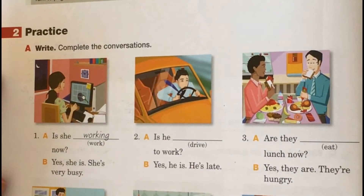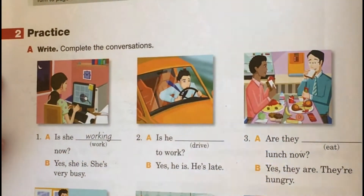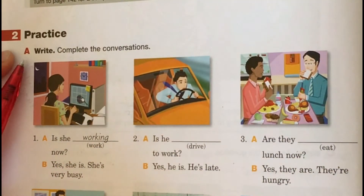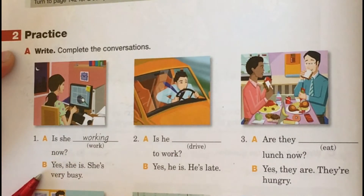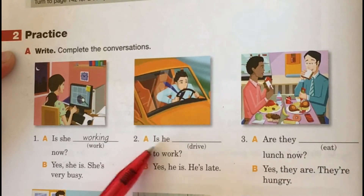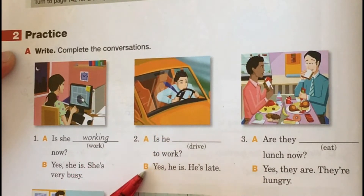Okay students, look here at number two. Practice. Write. Complete the conversations. Number 1A: Is she working now? Yes, she is. She's very busy. Number 2: Is he driving to work? Yes, he is. He's late.